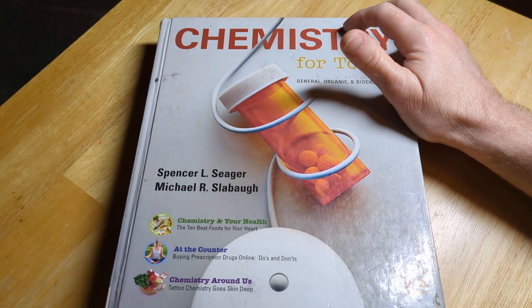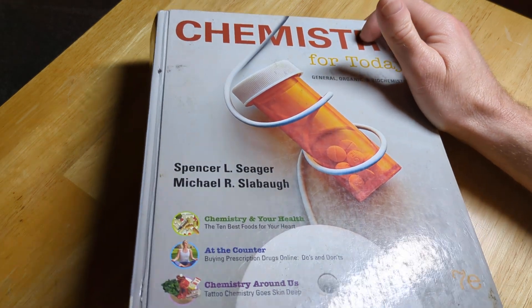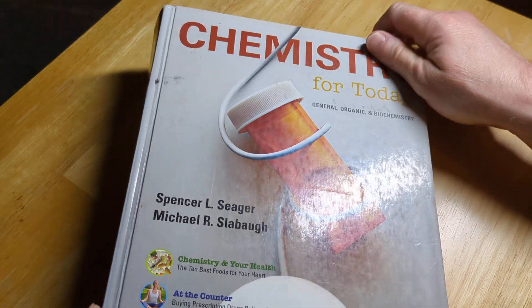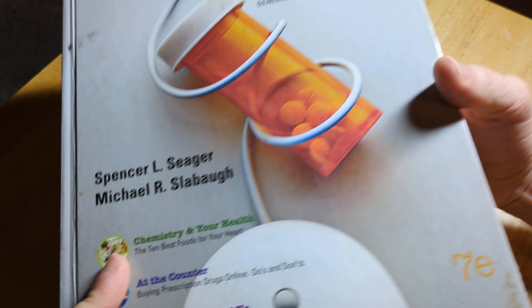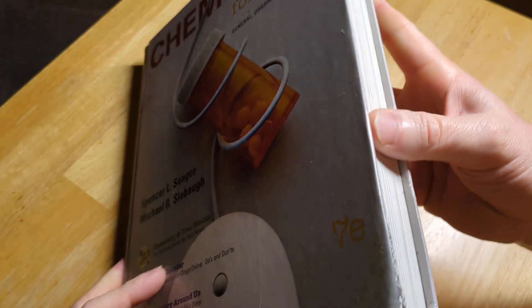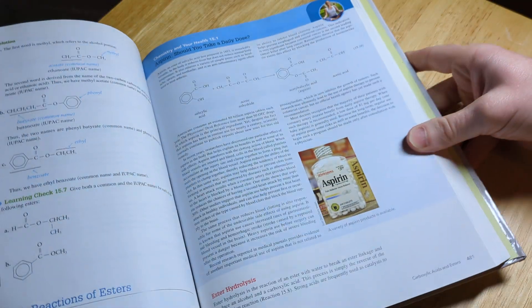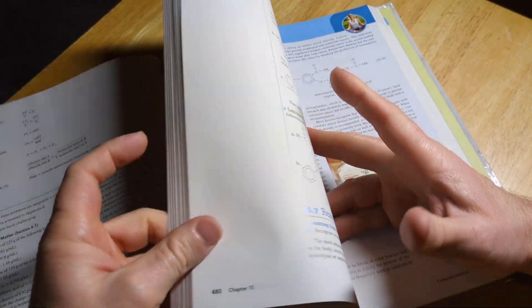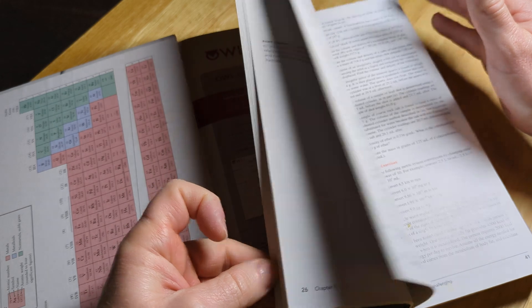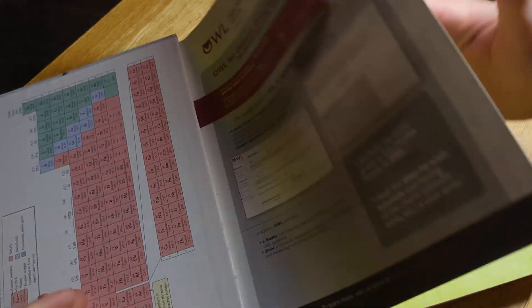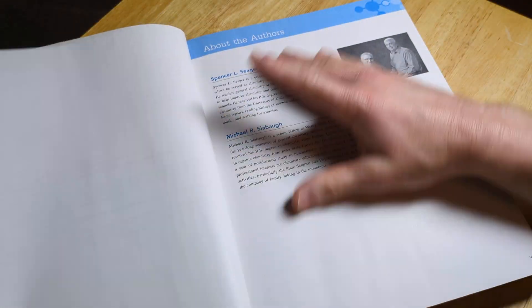Hello. In this video, we're going to take a look at this book. It's called Chemistry for Today, General Organic and Biochemistry by Seeger and Slabaugh. This is a textbook, so it has tons of information. You're going to get detailed information on chemistry.